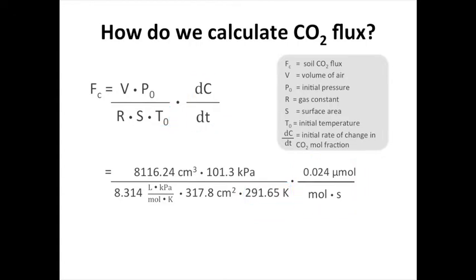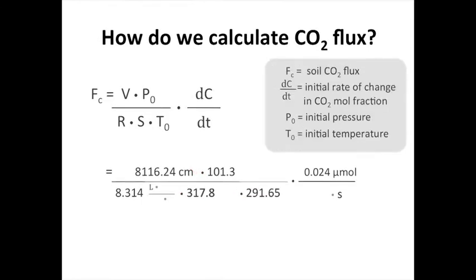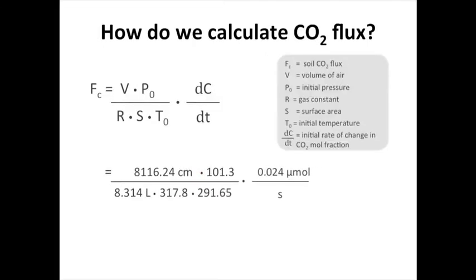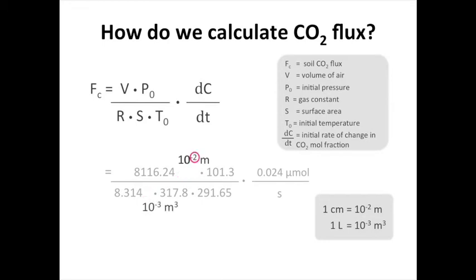Let's start by canceling our units. Which gives us this. We can further simplify the centimeters and liters by converting each of them to meters. One centimeter is equal to 10 to the negative 2 meters, and one liter is equal to 10 to the negative 3 meters cubed. Now we can cancel those terms. And do the math. And we get our CO2 flux in micromoles per meter squared per second.